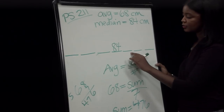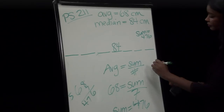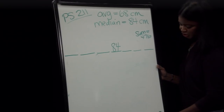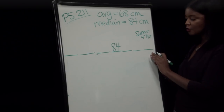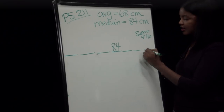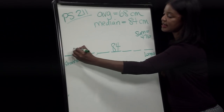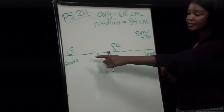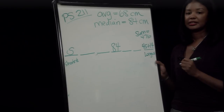Continuing the question: the length of the longest piece of rope is 14 centimeters more than 4 times the length of the shortest piece. If we call the shortest piece S, then the longest piece equals 4S + 14. The question asks for the maximum possible length of the longest piece.